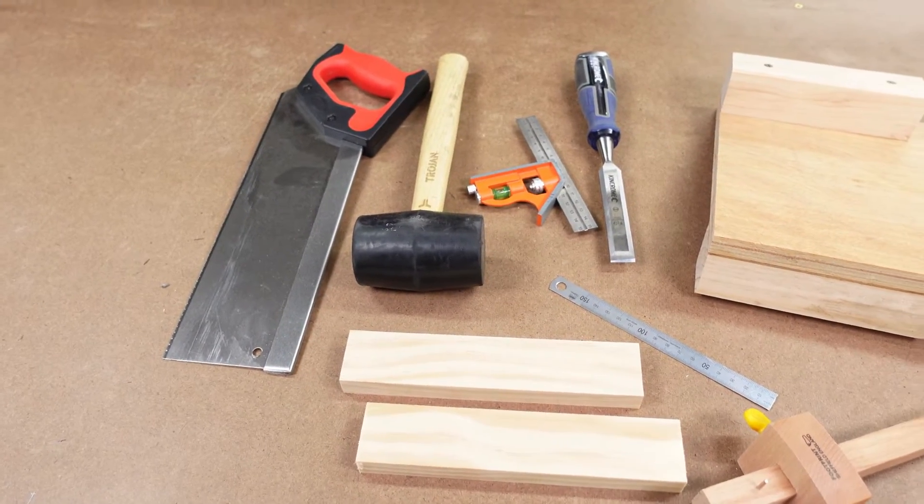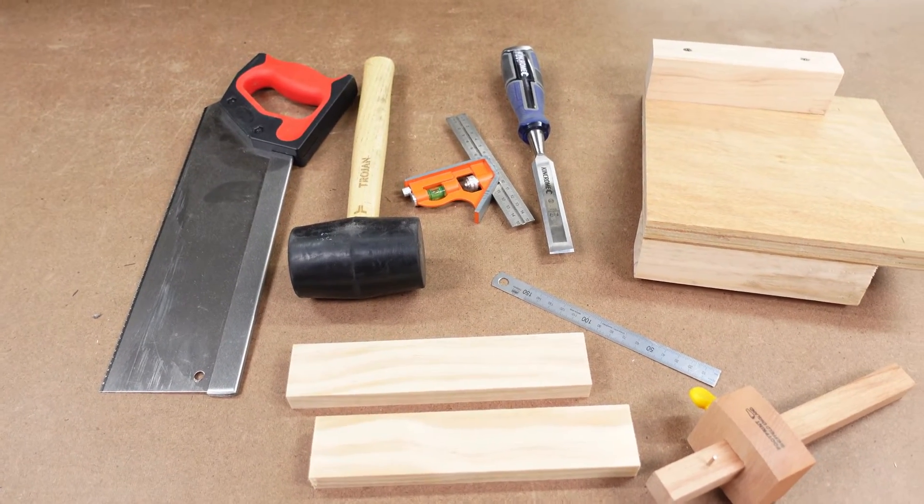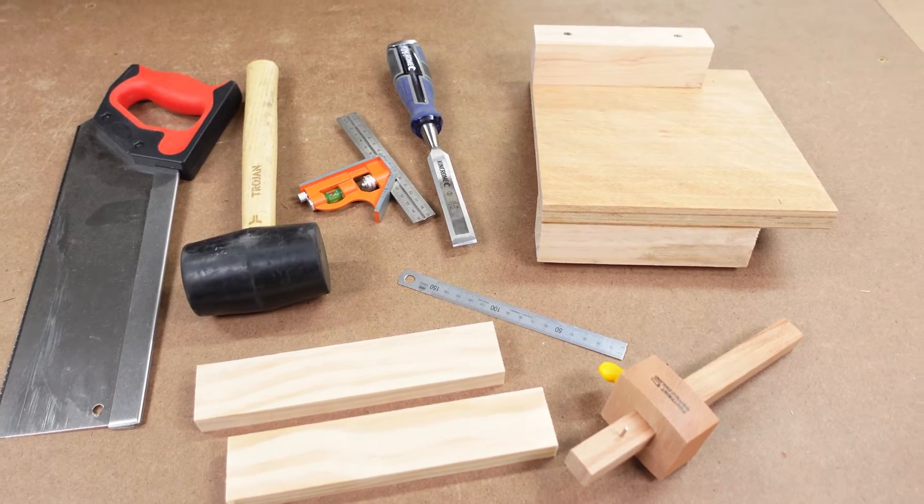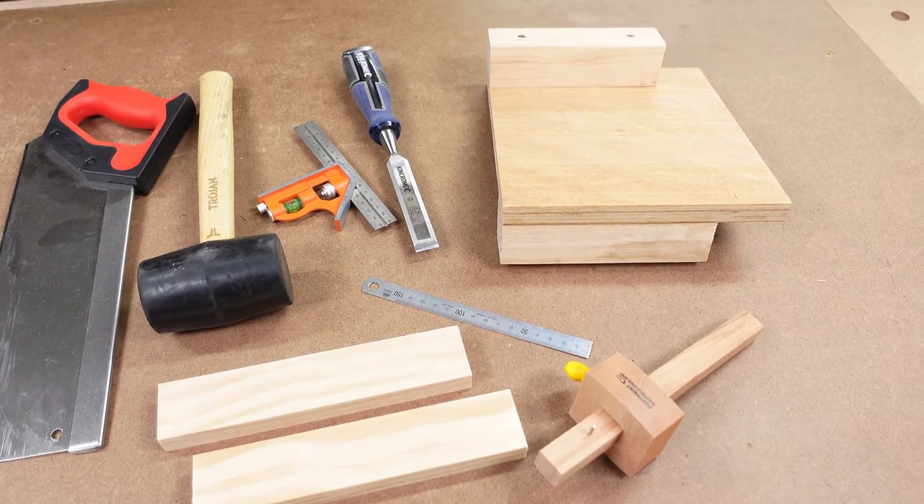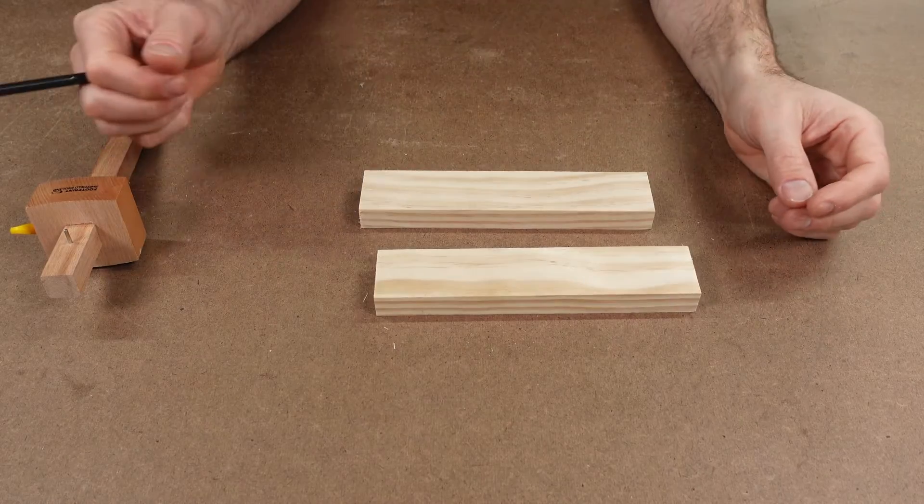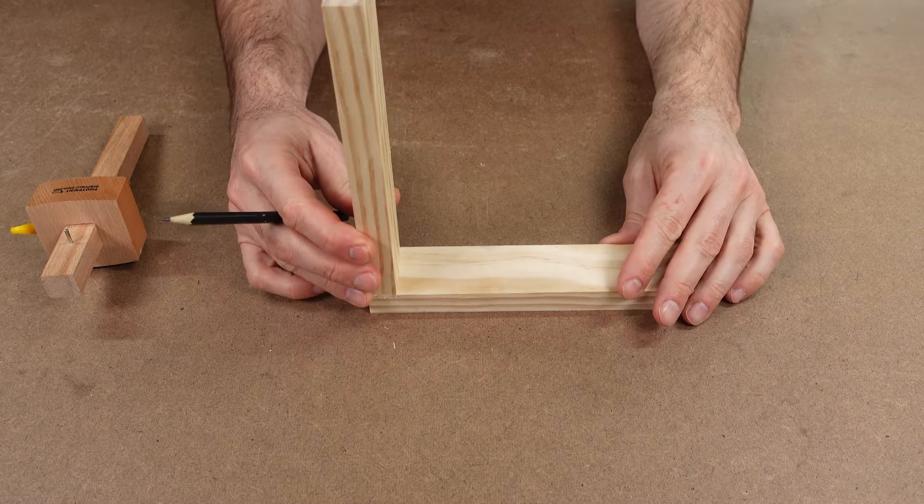You'll need the simple hand tools for woodworking as shown and a nice sharp pencil. The aim is to cut out a section that is the same thickness of the two timbers being joined. One piece then gets rebated into the other.